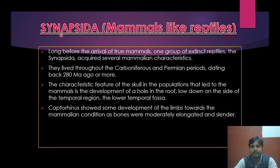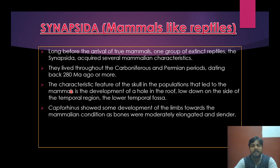The main origin of mammals traces to the synapsids, also called mammal-like reptiles. Long before the arrival of true mammals, this group of extinct reptiles acquired several mammalian characters. They lived throughout the Carboniferous and Permian periods, dating back to 280 million years ago or more. The characteristic feature of the skull in the lineage leading to mammals is the development of a hole in the roof, low down on the side of the temporal region — the lower temporal fenestra.